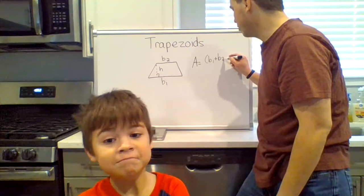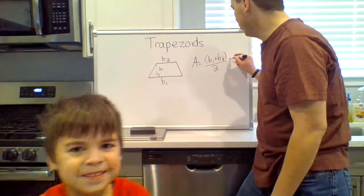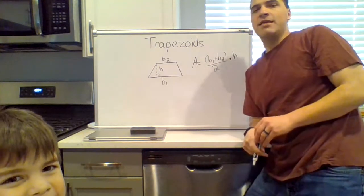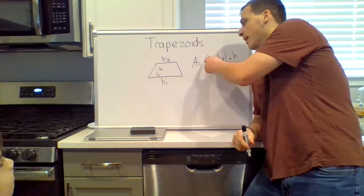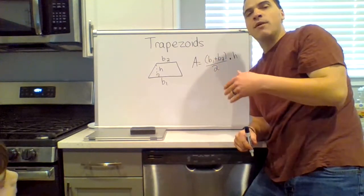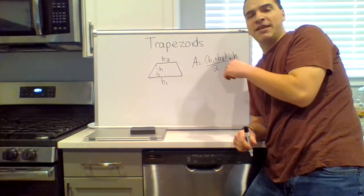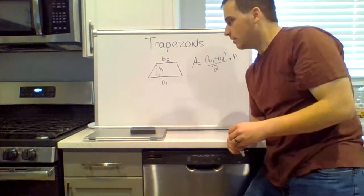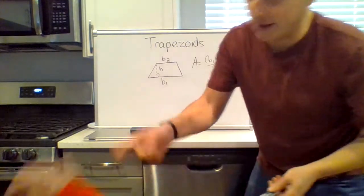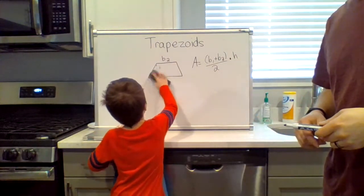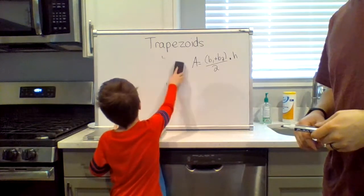Sometimes when they write this they do one half of b1 plus b2. It doesn't really matter what matters is you add up the bases, divide by two, then multiply by the height. Okay, so Nathan, erase this please. All this, but leave that word on the top.